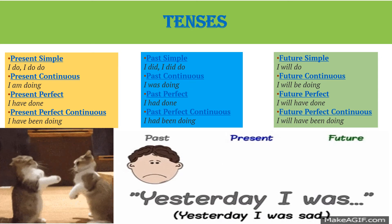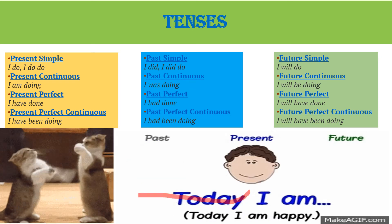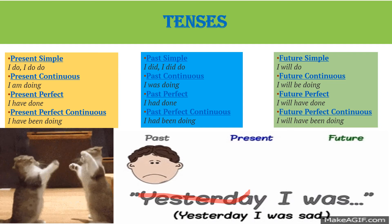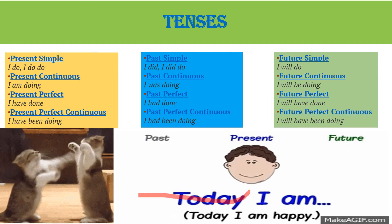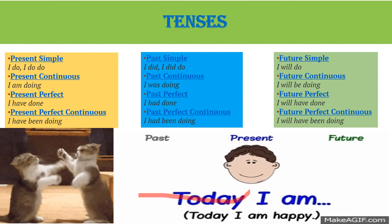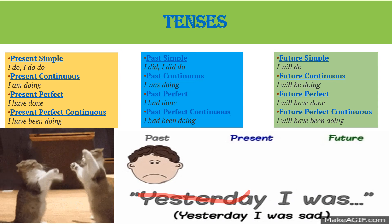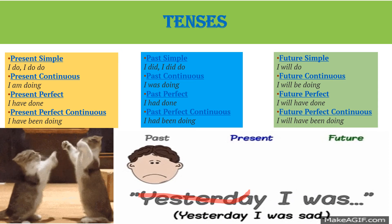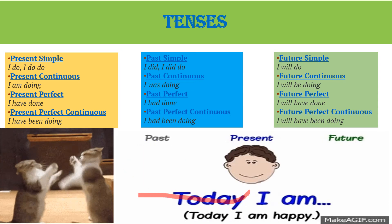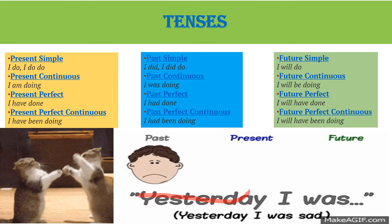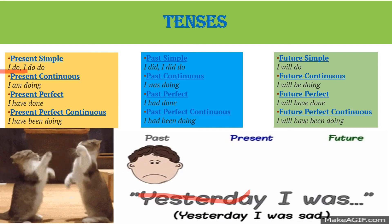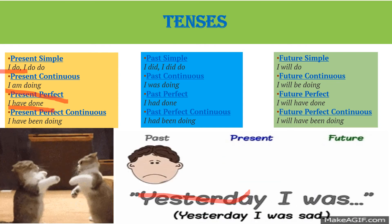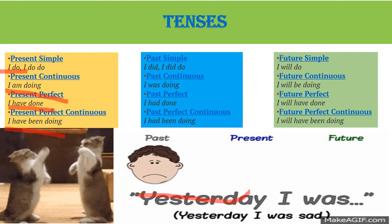In this example: 'Today I am happy, yesterday I was sad, and tomorrow I will be happy.' Now let's review the tenses once more. Simple present: I do. Present continuous: I am doing. Present perfect: I have done. Present perfect continuous: I have been doing.